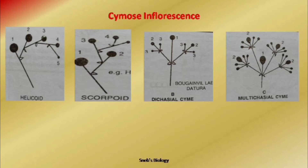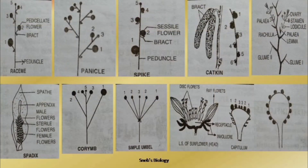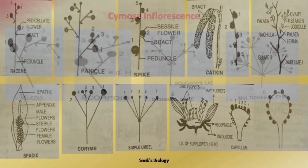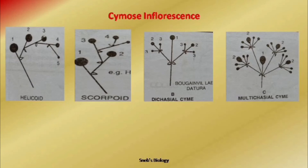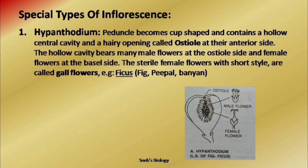So these three are the types of cymose inflorescence. We have already discussed racemose and its types, and cymose and its types. Now we will talk about three special types of inflorescence, and the first one is hypanthodium.